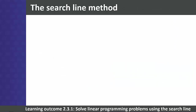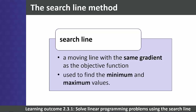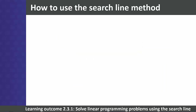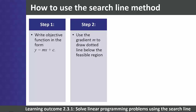At Level 4, students need to use the search line method rather than this trial-and-error vertices method. A search line is a moving line with the same gradient as the objective function. We move it through the feasible region to find the minimum and maximum values. Step 1: write the objective function in the standard form of a straight line, y equals mx plus c — remember that m gives the gradient.